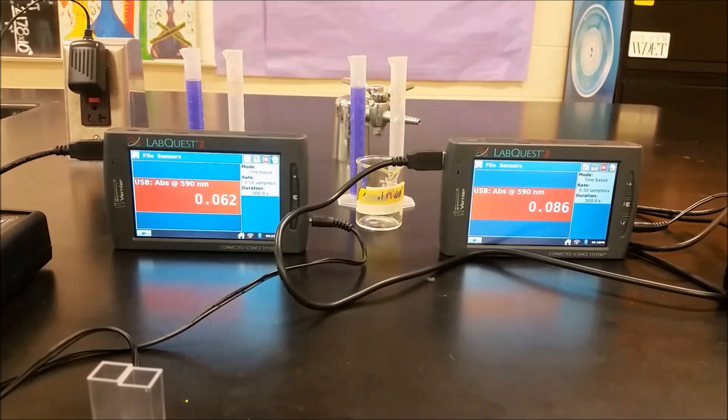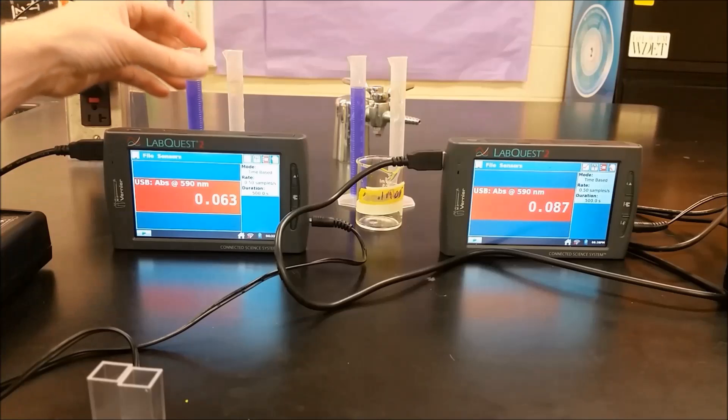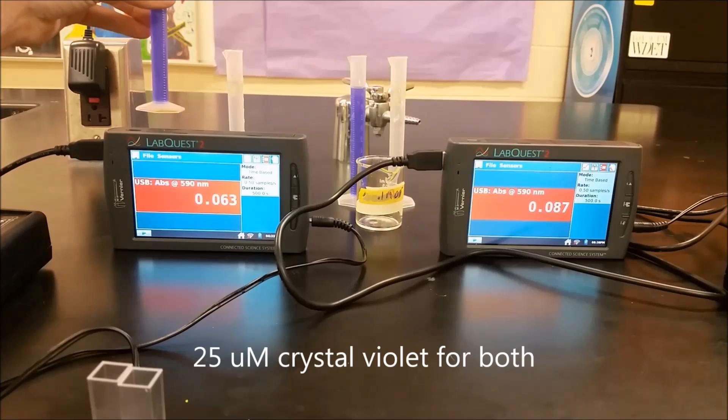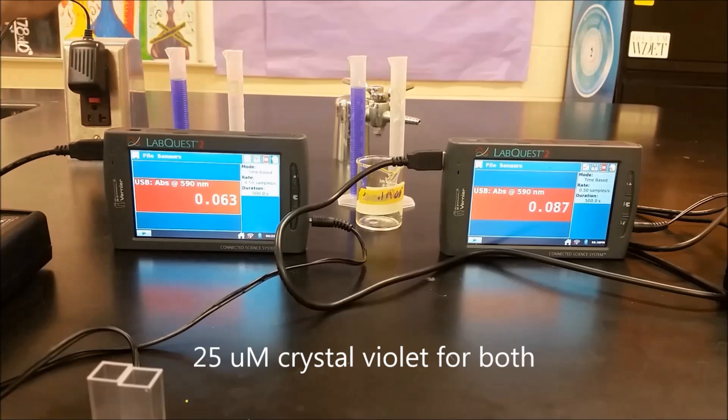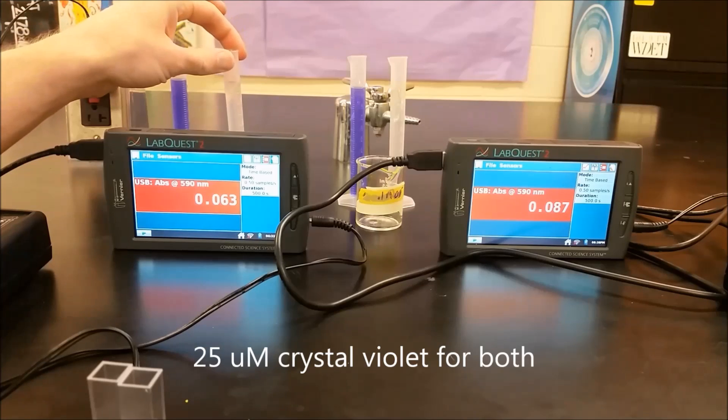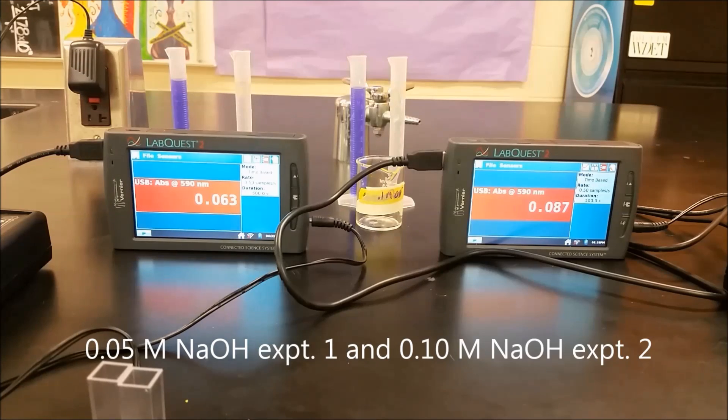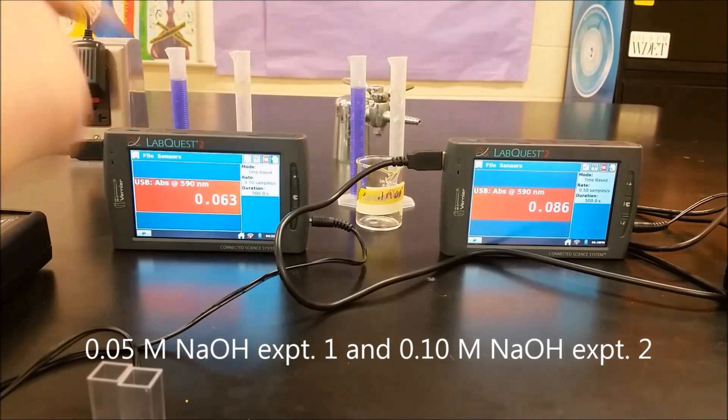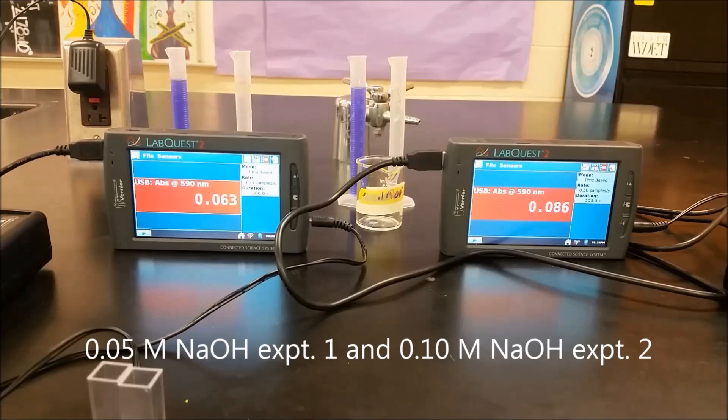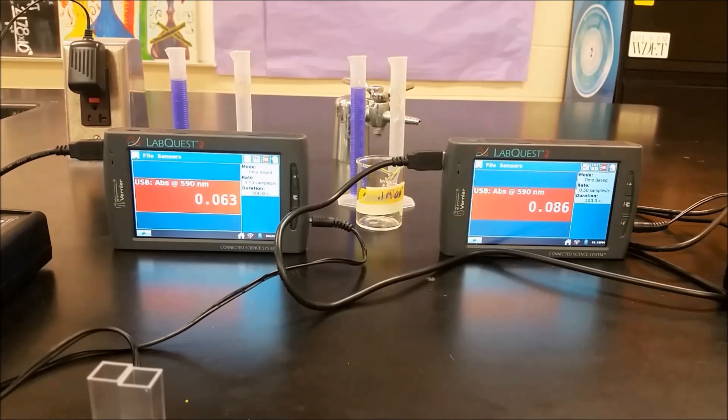So now we're ready to begin our kinetics experiment. And we've set up two situations to run side by side so you can see and compare. So we have a 25 micromolar crystal violet solution for both. And over here we have 0.05 molar hydroxide. And then over here we have 0.1 molar hydroxide. So what we're doing is we've doubled the concentration of hydroxide while keeping the volumes constant. So we're going to mix the two and we're going to run.